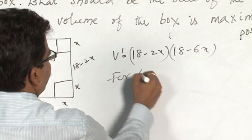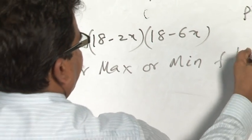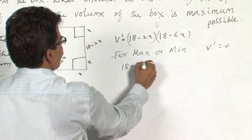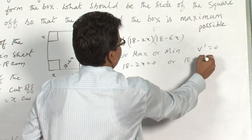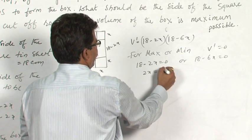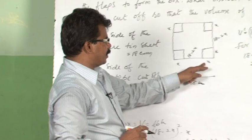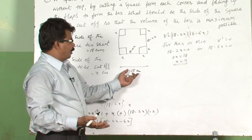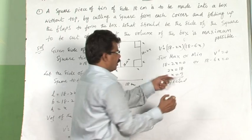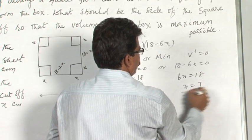For local maxima or minima, we equate V' = 0. That gives 18 − 2x = 0 or 18 − 6x = 0. From the first, x = 9. But if x = 9, this 9 plus that 9 totals 18, and the entire paper is used up so a box cannot be formed — this value is rejected. From the second equation, 6x = 18, so x = 3.